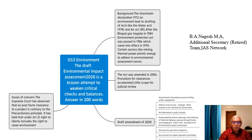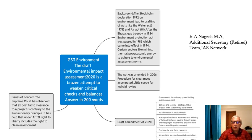Coming straight to the amendment of 2020: the first thing is the government has retained with itself the discretionary power, limiting public engagement. What this means is the government will decide which area of activity should be brought into the public domain or whether there should be a public hearing. Defense and security are strategic matters and are kept out of the public domain.